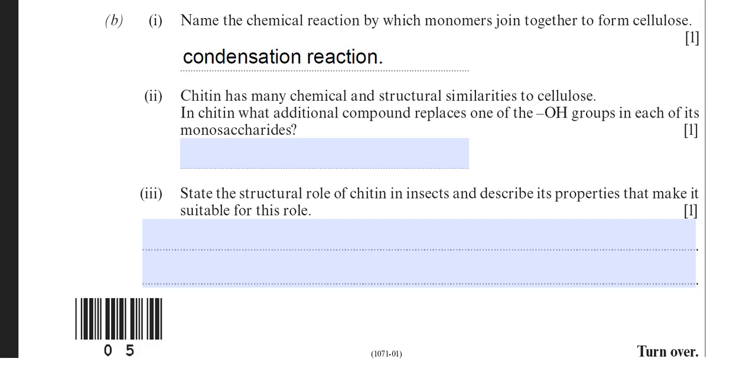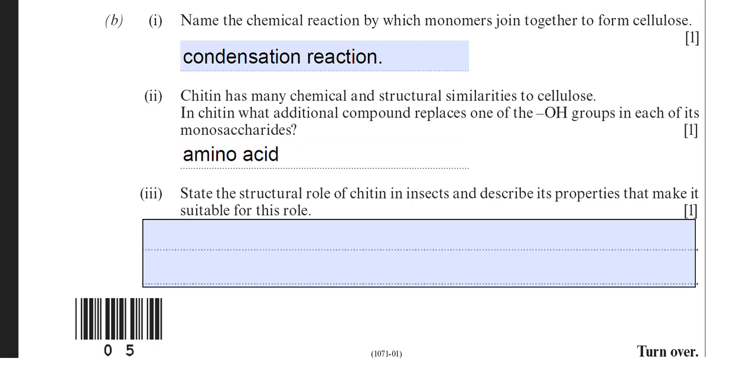Now I don't particularly agree with that marking point in the mark scheme, but according to the syllabus, as long as you're able to say that chitin has either amino acid or glucosamine group in replace of the OH group, that would be acceptable. But in reality that's not really what is found in chitin. I've added amino acid there as the answer. But the real molecule that replaces the OH group is something called N-acetyl glucosamine. Like I say there is glucosamine in the answer scheme as well, but I've added amino acid because that's also in the mark scheme.